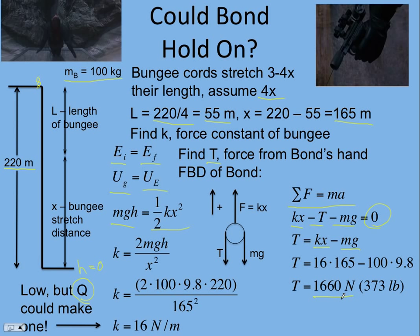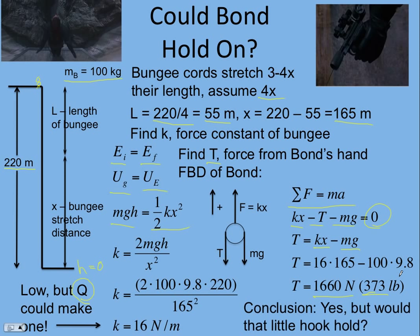Solving for the tension: it's the upward pull of the bungee minus Bond's weight, which comes out to 1,660 newtons, or about 373 pounds. For somebody like James Bond who works out, we can conclude he could hold the gun with that much force — though the little hook is another matter. We'll leave that up to Q. For more analysis, see Bond bungee jump part two.